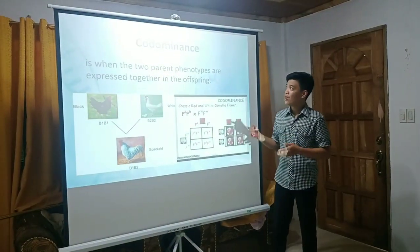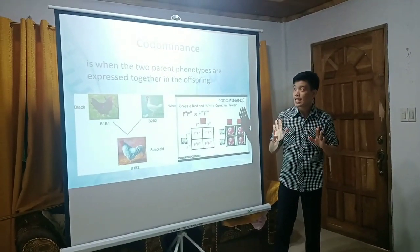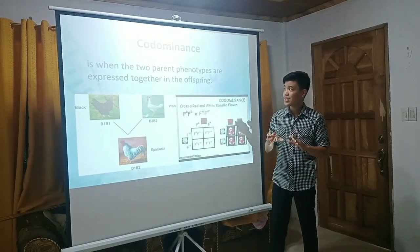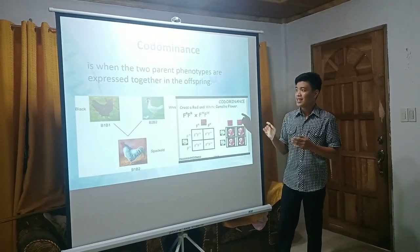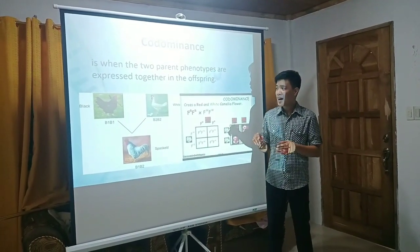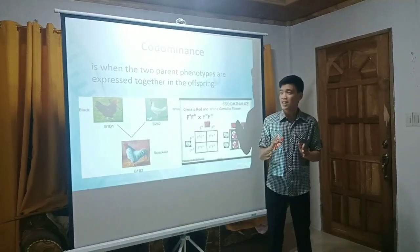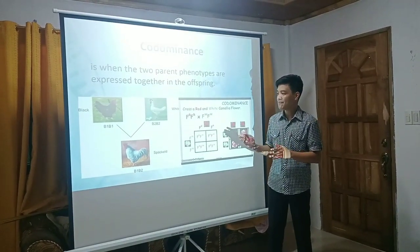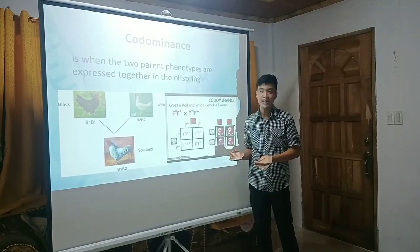Now, let's proceed to co-dominance. In co-dominance, when our two parents' phenotypes are both expressed together in an offspring, the phenotype of both the mother and the father appear in the same offspring. That's how co-dominance works.